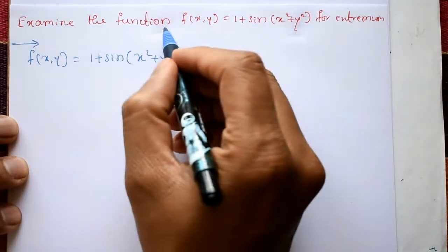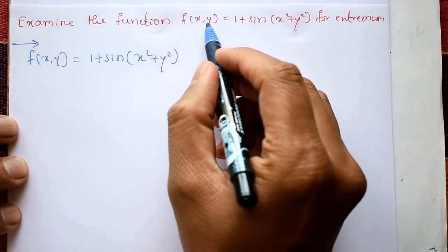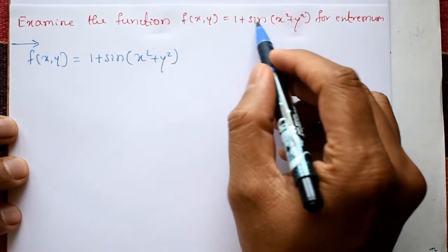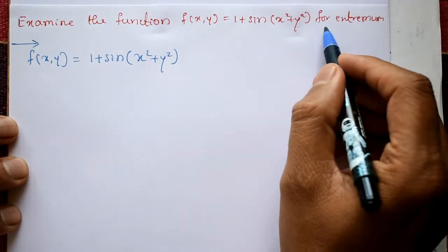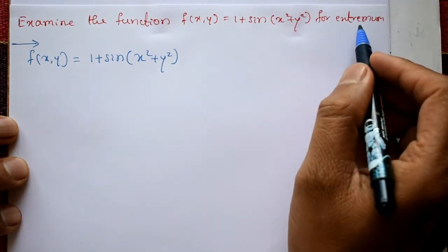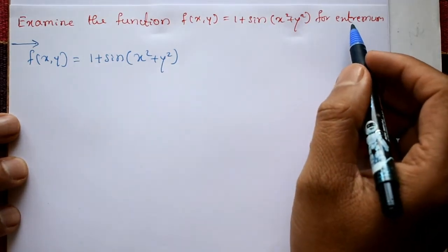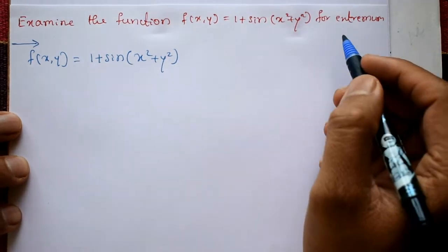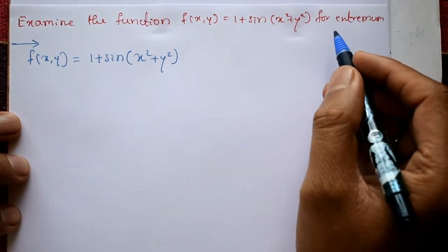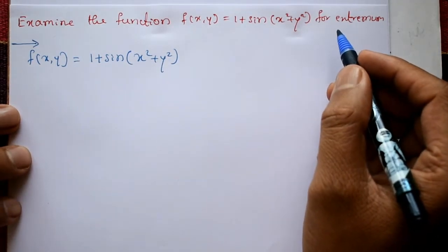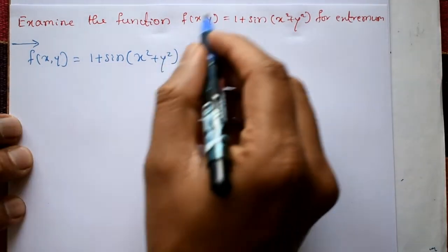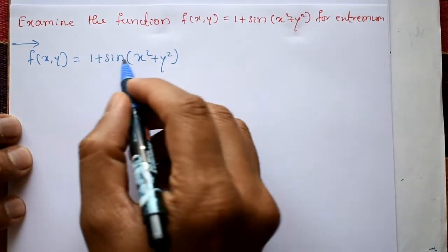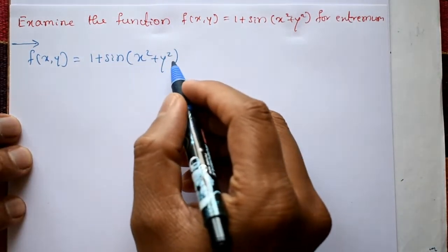Examine the function f(x, y) = 1 + sin(x² + y²) for the extremum. Extremum means find the maximum or minimum value. Given f(x, y) = 1 + sin(x² + y²).